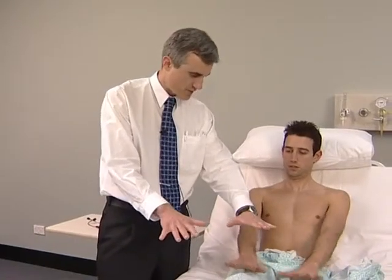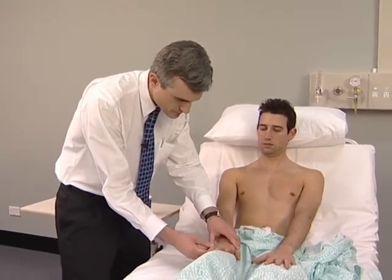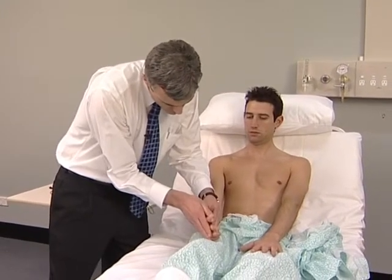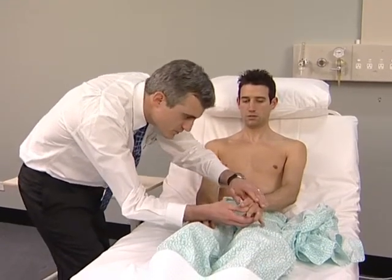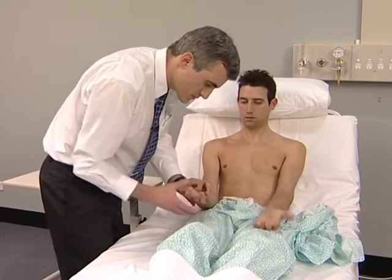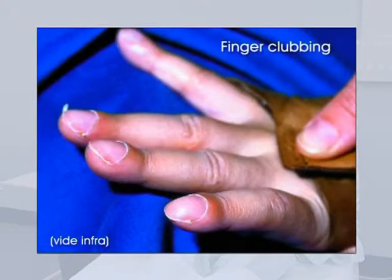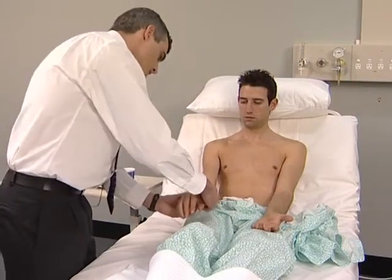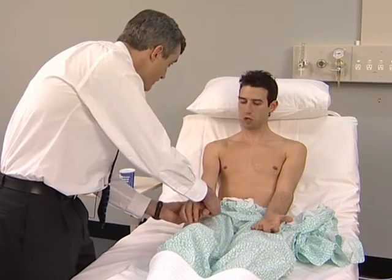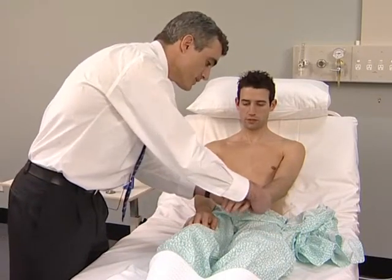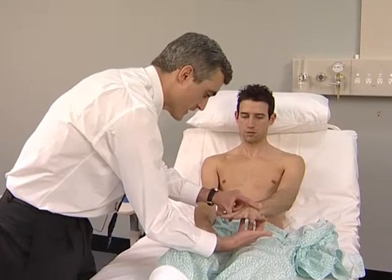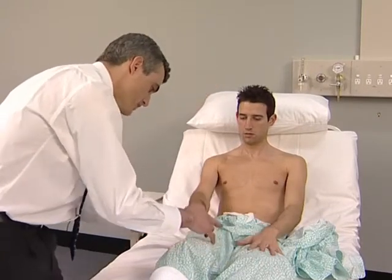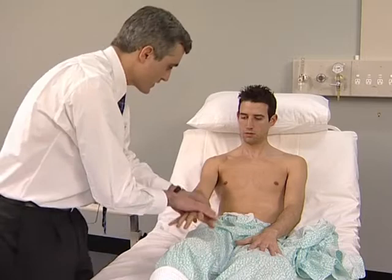Ask the patient to hold their hands straight out. Check whether there is tenderness when pressing the wrist on each side. Then ask the patient to spread the fingers apart against resistance. Weakness can be due to brachial plexus involvement from a lung carcinoma.